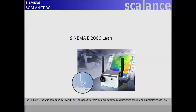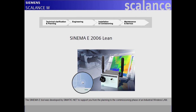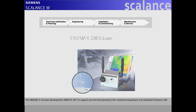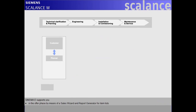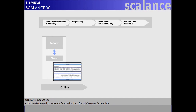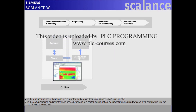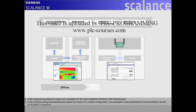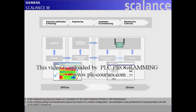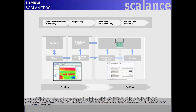The CINEMA-E tool was developed by C-MaticNet to support you from the planning to the commissioning phase of an industrial wireless LAN. CINEMA-E supports you in the offer phase by means of a sales wizard and report generator for item lists. In the engineering phase by means of a simulator for the entire industrial wireless LAN infrastructure. In the commissioning and maintenance phase by means of a central configuration, documentation and up-download of all parameters into the Scalance W devices.